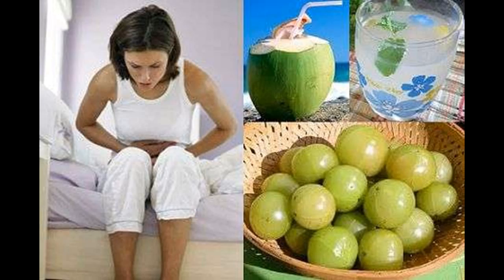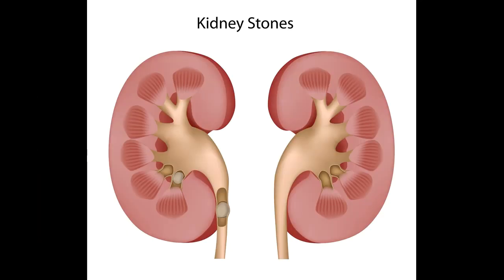A simple and most important lifestyle change to prevent stones is to drink more liquids — water is best. Someone who tends to form stones should try to drink enough liquids throughout the day to produce at least 2 quarts of urine in every 24-hour period. In the past, people who form calcium stones were told to avoid dairy products and other foods with high calcium content. Recent studies have shown that foods high in calcium, including dairy products, may actually help prevent calcium stones. Taking calcium in pill form, however, may increase the risk of developing stones. Someone who has highly acidic urine may need to eat less meat, fish, and poultry, as these foods increase the amount of acid in the urine.